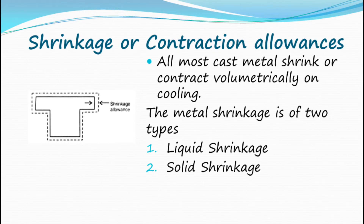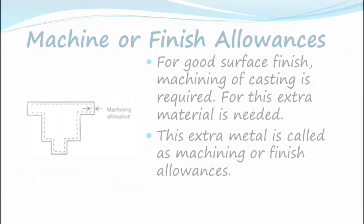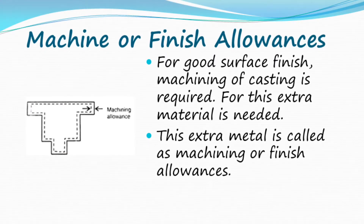Shrinkage or contraction allowance: Almost all cast metals shrink or contract volumetrically on cooling. Metal shrinkage is of two types: liquid shrinkage and solid shrinkage.